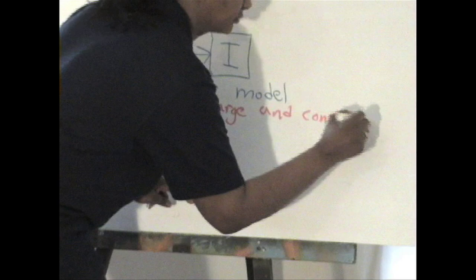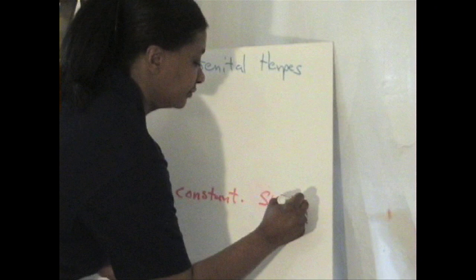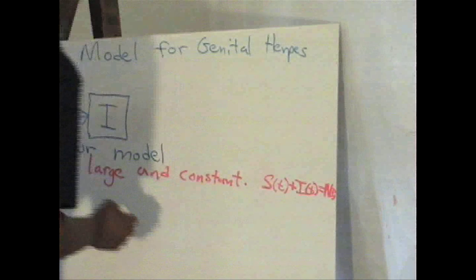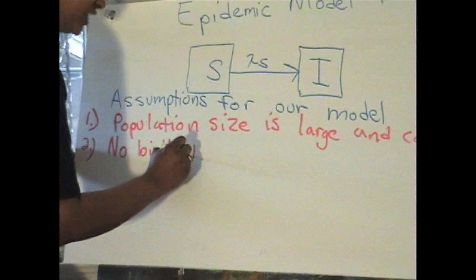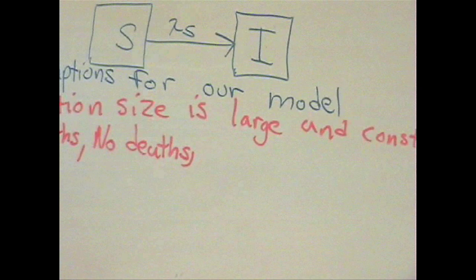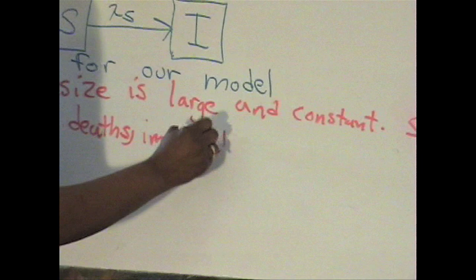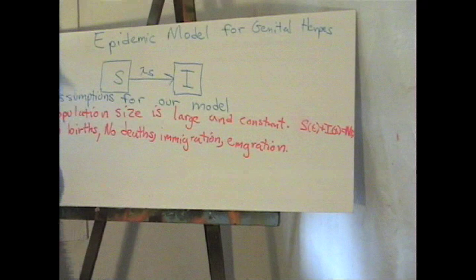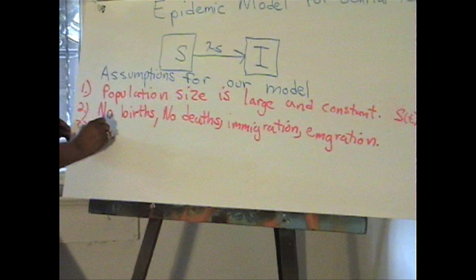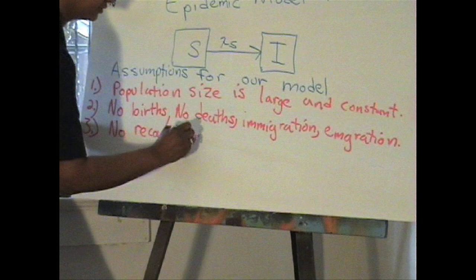Our second assumption: no births, no deaths, and no immigration in this compartment model. Our third assumption for this two-compartment model is no recovery included. Our fourth assumption is homogeneous mixing.